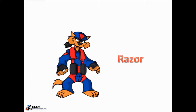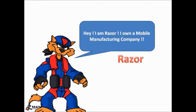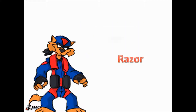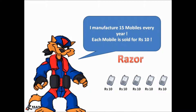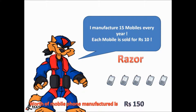Similarly, Razor is a gadget freak. He owns a mobile manufacturing company. In his mobile manufacturing firm, he manufactures 15 mobile phones every year and sells them for rupees 10. I know a mobile phone at rupees 10 is very cheap, but this is just an example, so you can assume it for now. The worth of the mobile phones manufactured is rupees 10, the price of each mobile phone, into number of mobile phones which is 15 — that is 10 times 15, or rupees 150.